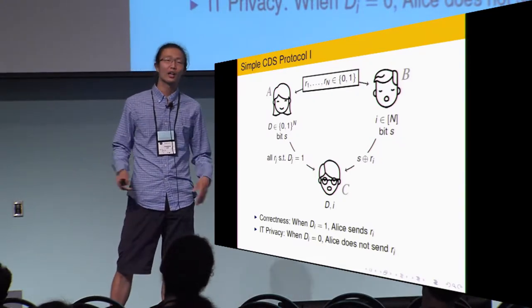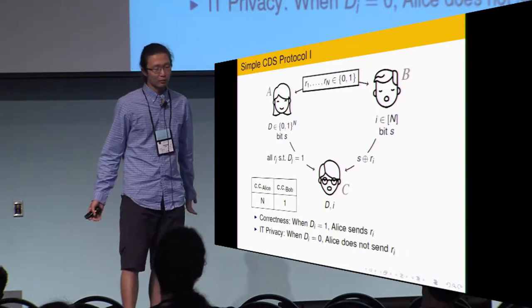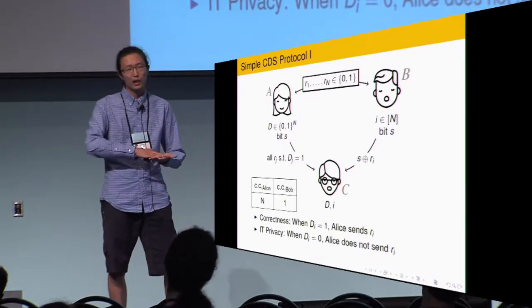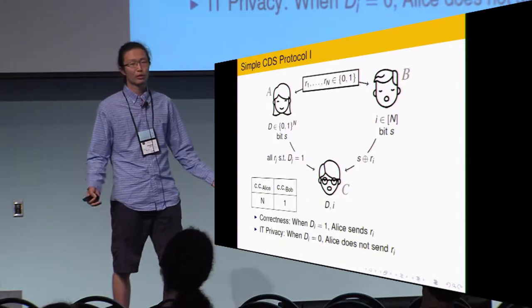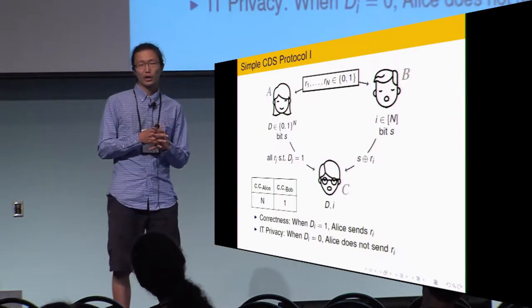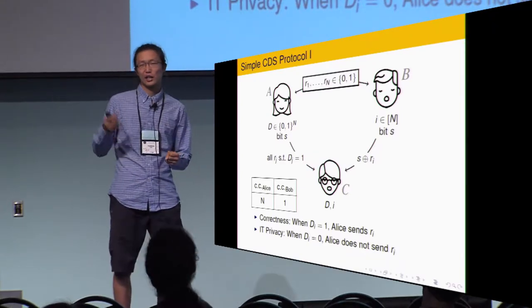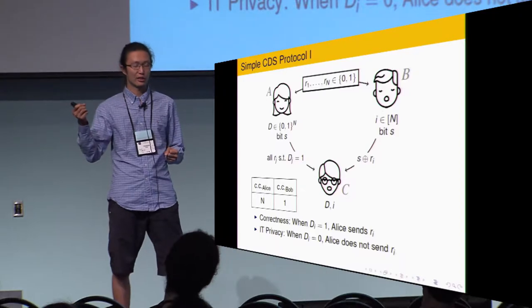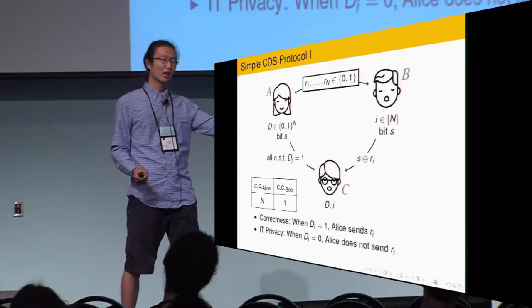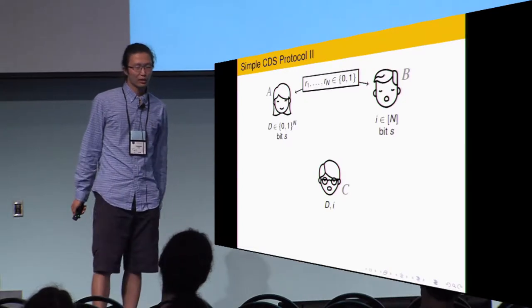We have both privacy and correctness. In this scheme, Bob's communication is minimized to one bit. Alice's communication is at most n bit. When D_i equals one, Bob reconstructs the secret by a very simple way. He just XOR the secret, the bit sent by Bob and one bit sent by Alice.